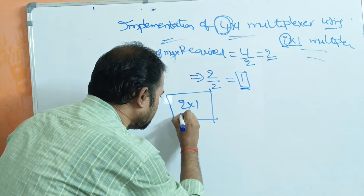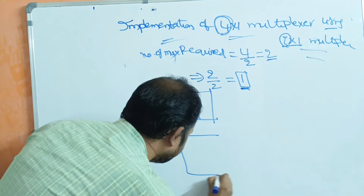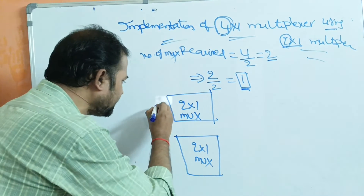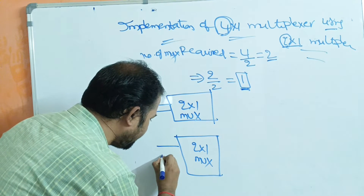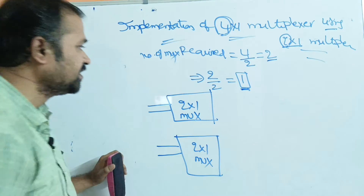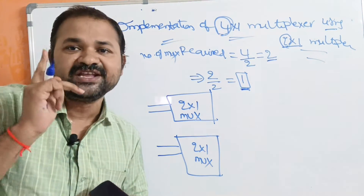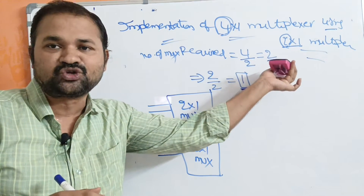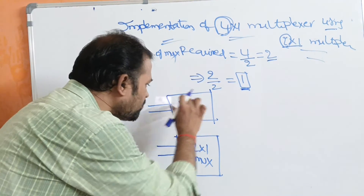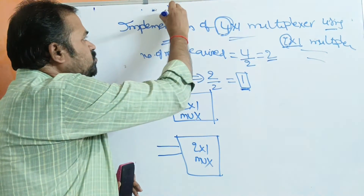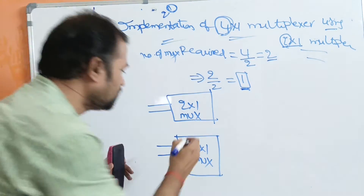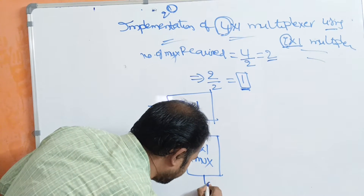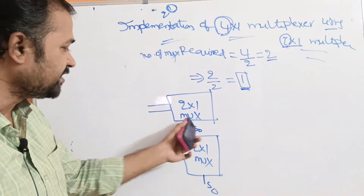This is the first 2 by 1 MUX, and this is the second 2 by 1 multiplexer. Each 2 by 1 multiplexer has 2 inputs. At the first level, both multiplexers need the same selection input, because they are at the same level. A 2 by 1 multiplexer is 2 to the power 1, requiring 1 selection input. Let that selection input be S0, shared by both first-level multiplexers.